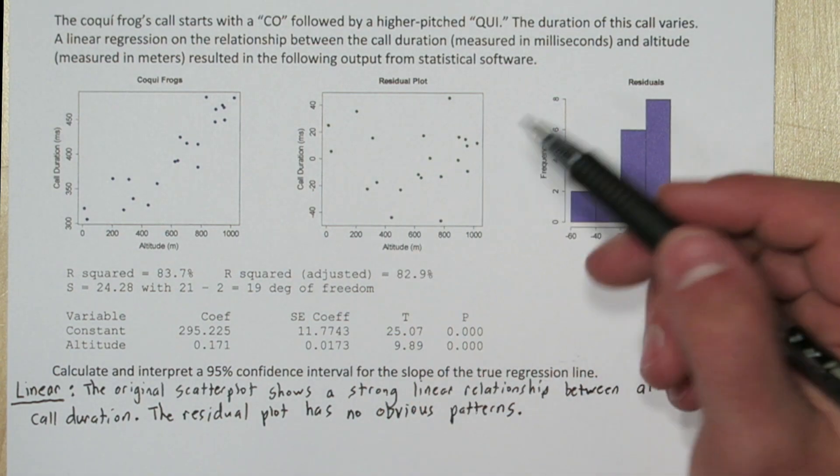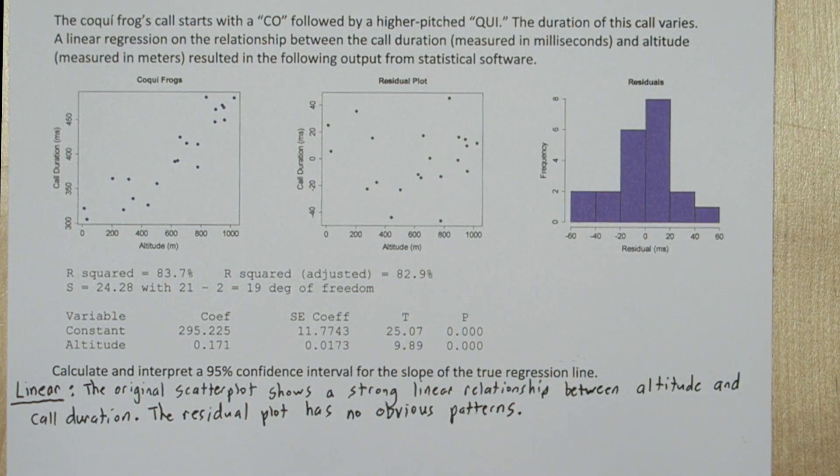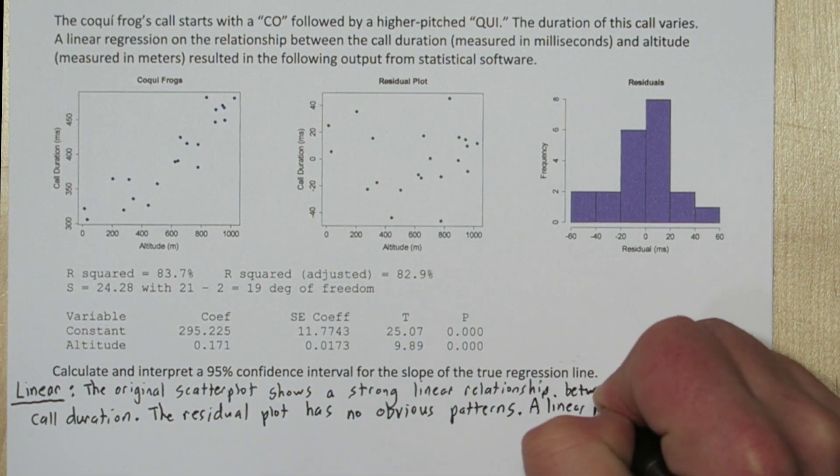Also in our residual plot, we don't see any obvious patterns, so it seems like a linear model is appropriate, so the linear condition is met.